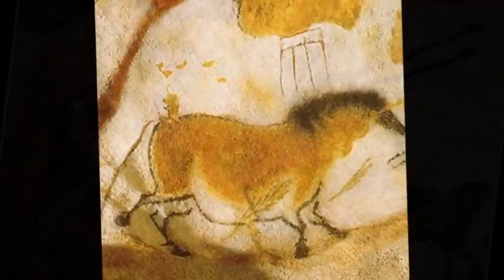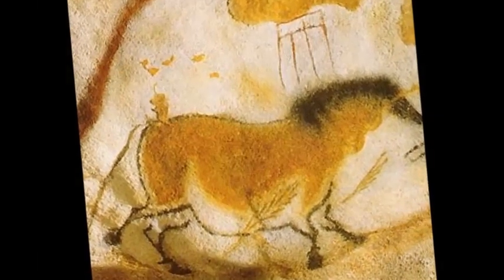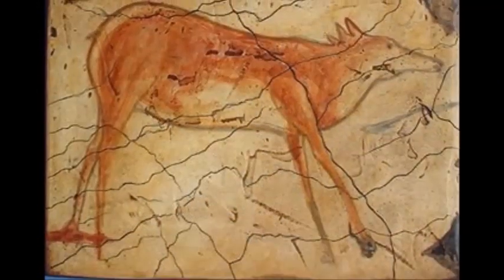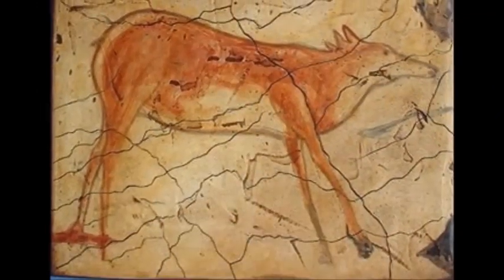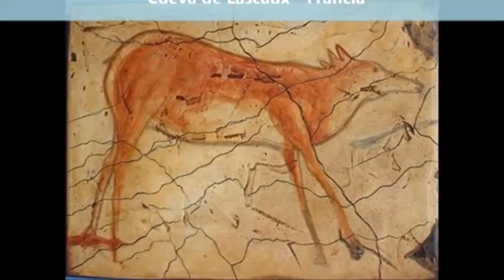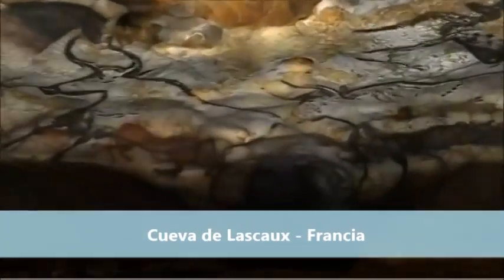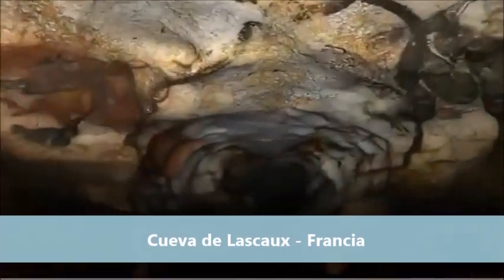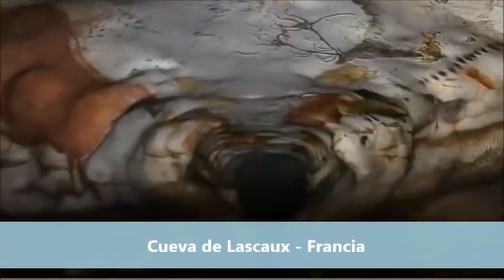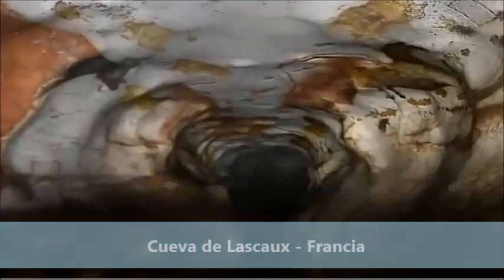Los colores son planos; algunas figuras esbozadas en negro, y en algunos casos aprovechando las salientes de la roca, les daban volumen a los cuerpos. Las figuras más destacantes eran las de los bisontes, renos, caballos, toros, etc.